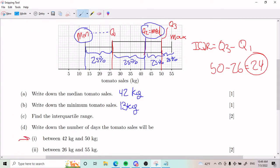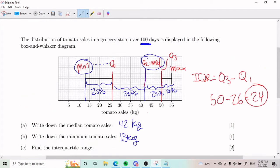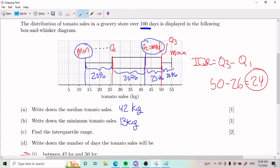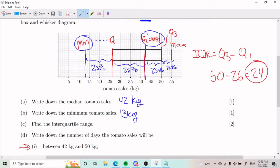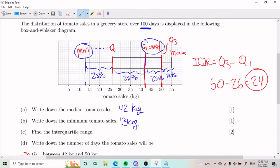For D part I, between 42 and 50, let's first identify where those are. We have 42, which was here, right on the median. And we have 50, which goes right here on Q3. So we're looking at this section here. At this point, you should have noticed something special about what I'm highlighting. I wrote earlier that this is 25%.